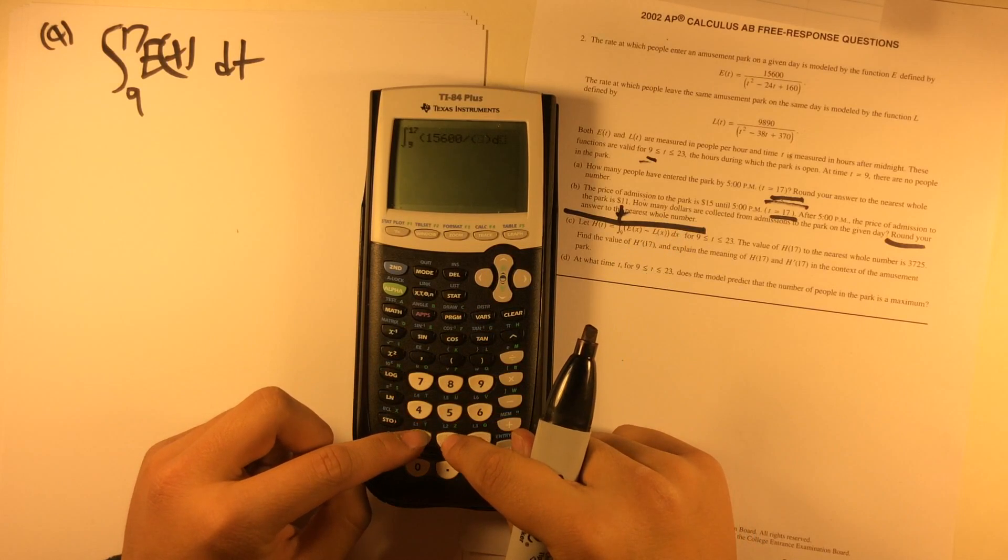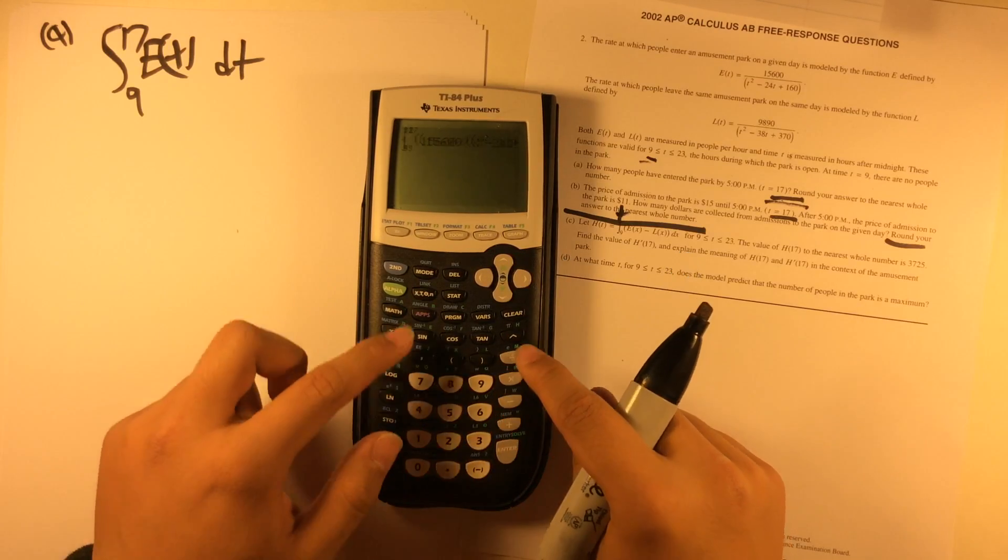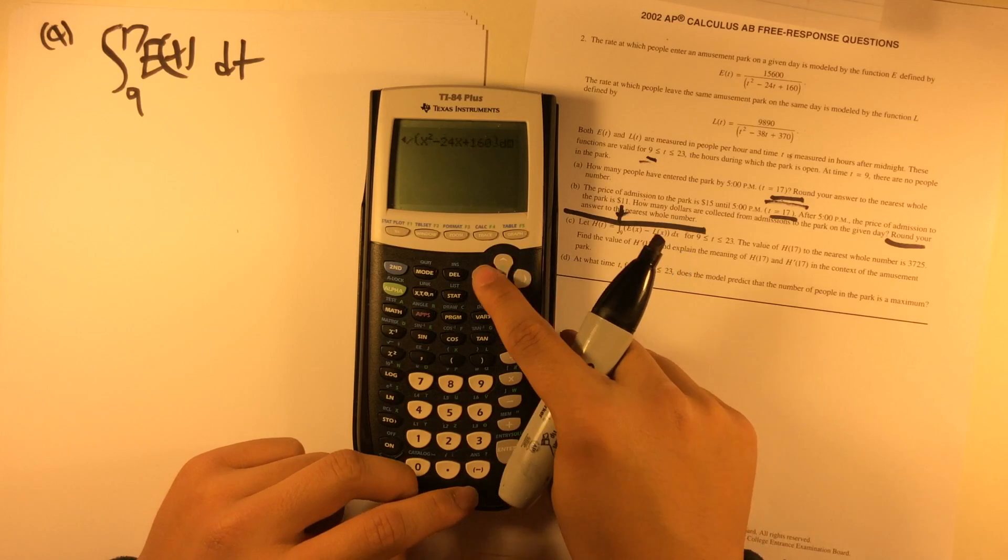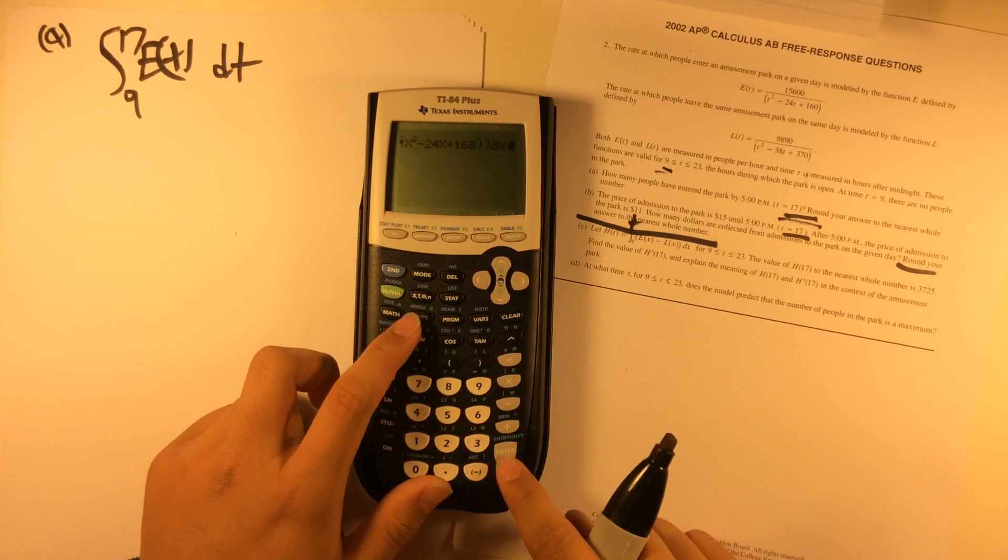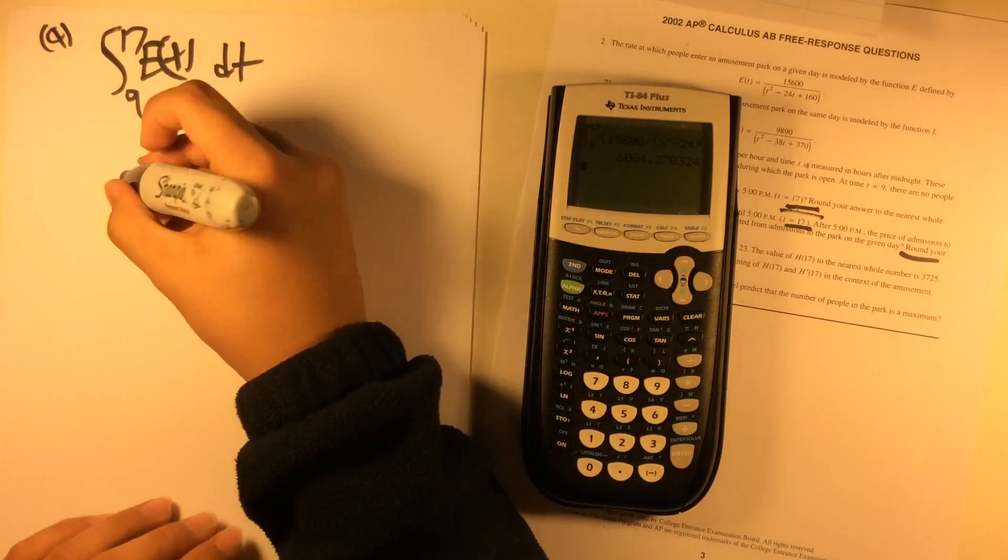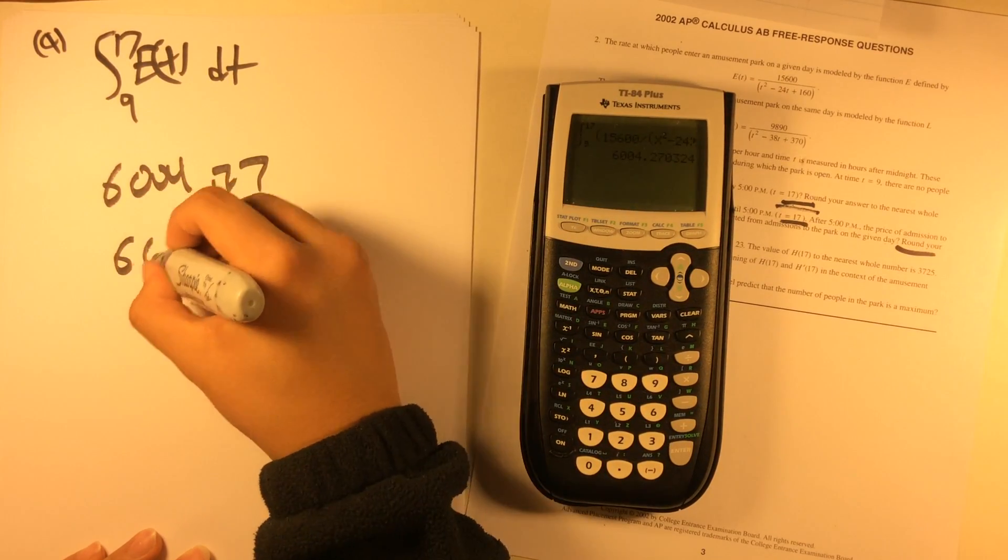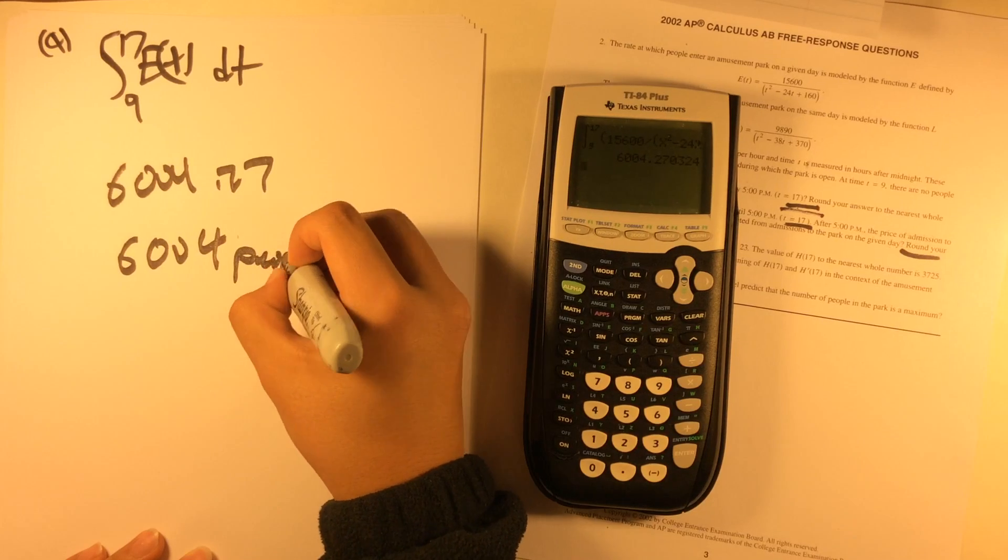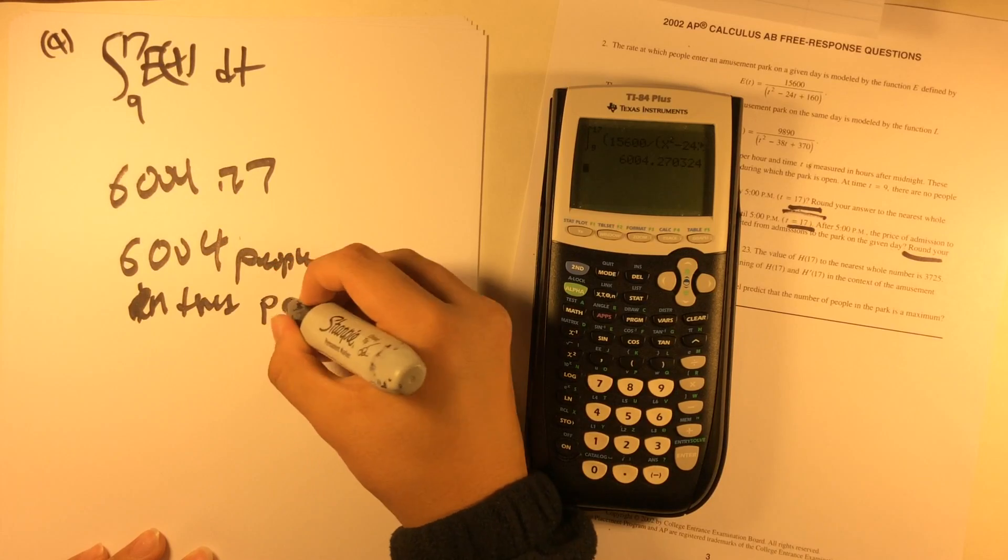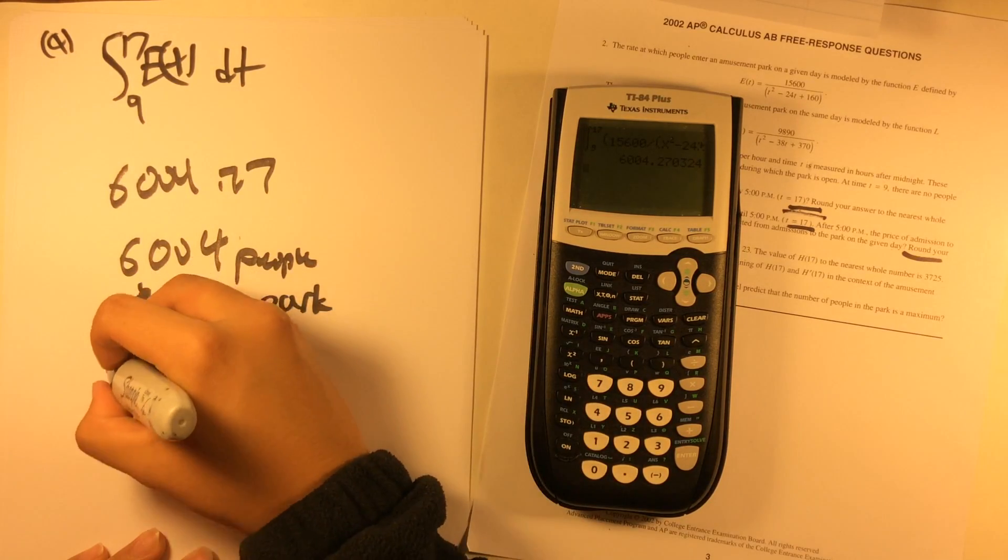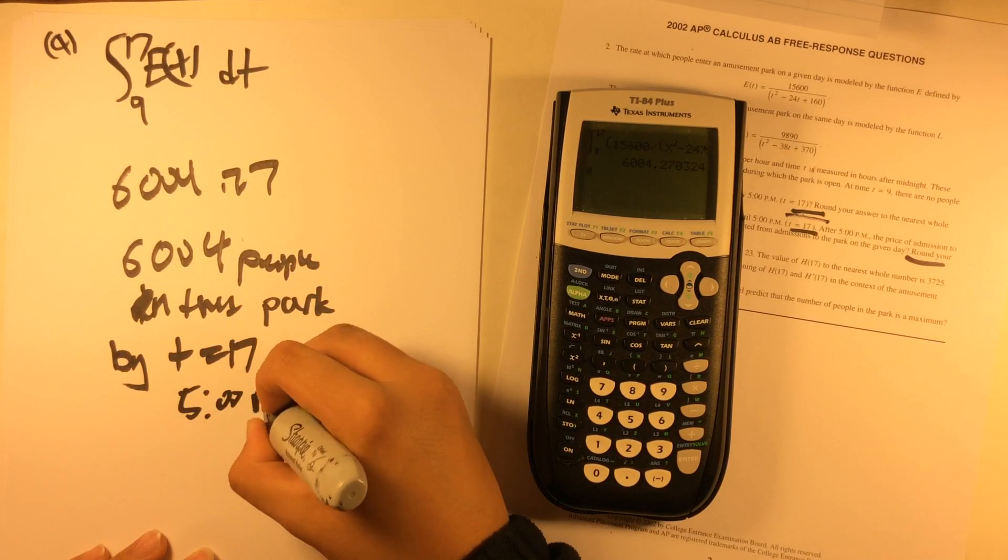So 15600 divided by X squared minus 24X plus 160, in parentheses, and dX, enter. You get 6004.27 people, you round to the nearest whole number, 6004 people in the park by T equals 17, 5 o'clock p.m.